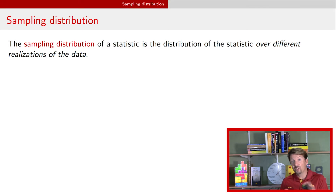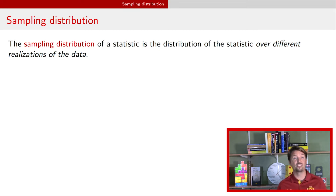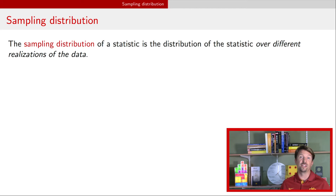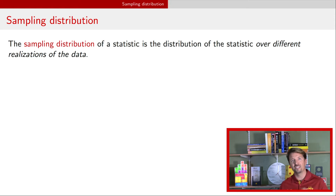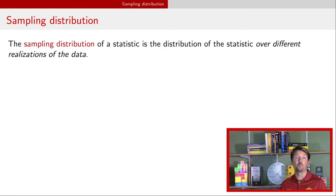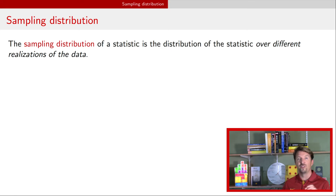We could do this with any statistic. We could take a mean or median, a minimum or maximum, an interquartile range, or different quartiles. But for our purposes of constructing basic confidence intervals and p-values for normal models and binomial models, we're really going to want to focus in on a couple of very specific statistics.